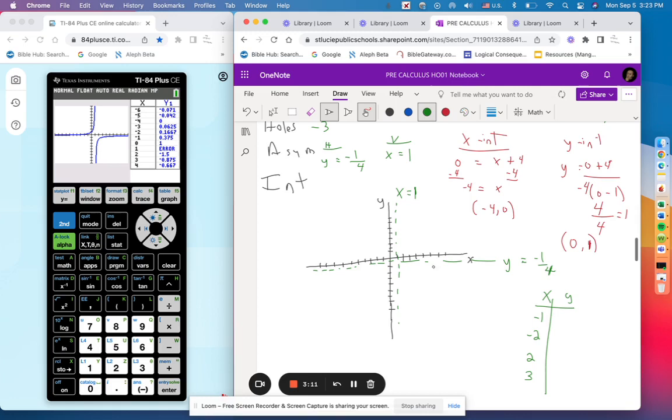So let's see. Negative 1 is 0.375. Negative 2 is 0.1667, close enough. 2 is negative 1.5. And 3 is negative 0.875.